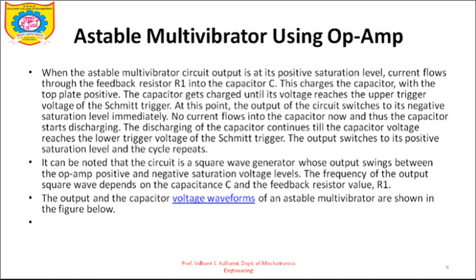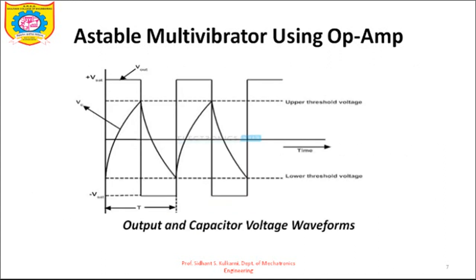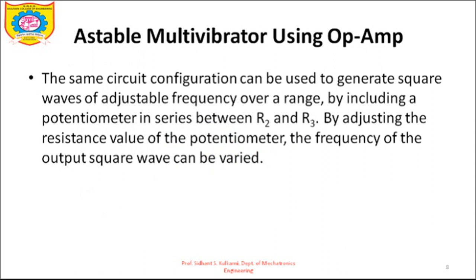The output and capacitor voltage waveforms of the astable multivibrator are shown in the figure below. When the output is at positive saturation, the capacitor charges from its lower threshold value to the upper threshold value. When it switches, it discharges back. The upper threshold value VUT and lower threshold value VLT are decided by R2 and R3. The same circuit configuration can also be used to generate square waves of adjustable frequency by including a potentiometer in series with R2 and R3.